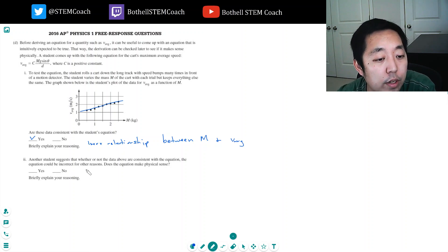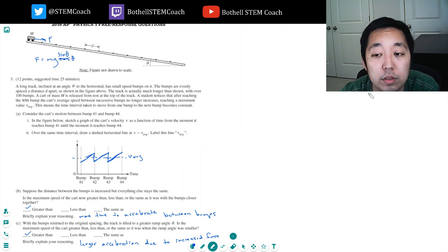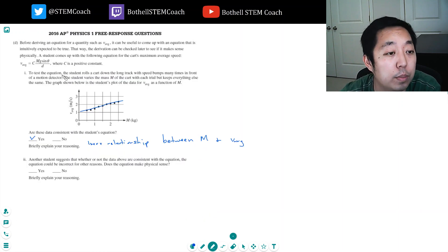Another student suggests that whether or not the data above are consistent with the equation, the equation could be incorrect for other reasons. Does the equation make physical sense? Well, let's see what happens as I increase d, that's the spacing right? V average goes down. Is that what d is? But I said it should go up. So the d is wrong. The sine theta seems okay, I think. As d increases, v average should increase.